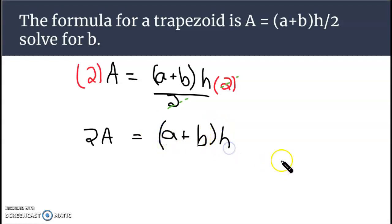Now I'm not going to distribute the h this time, I'm going to divide by it on both sides. So we're trying to isolate b, so we're kind of leaving a and b alone for a minute. So here's the expression we have: 2A over h is equal to a plus b.